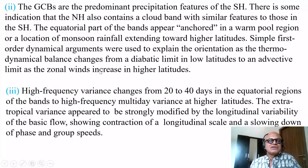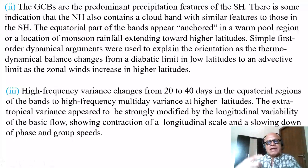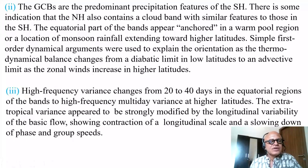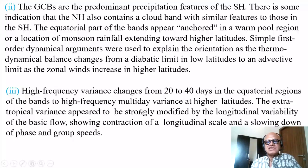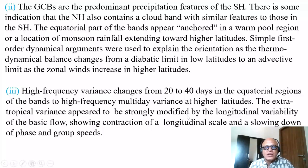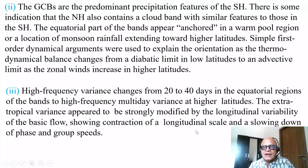Simple first-order dynamical arguments were used to explain the orientation of the thermodynamical balance, which changes from the diabatic limit in low latitudes — involving vertical motion and diabatic heating — to the advective limit as zonal winds increase at higher latitudes. High-frequency variance changes from 20 to 40 days in the equatorial regions of the bands to high-frequency multi-day variance at higher latitudes, showing transients in the ITCZ with inter-seasonal variability in lower latitudes becoming multi-day variability at higher latitudes.